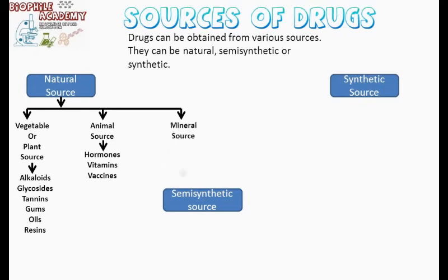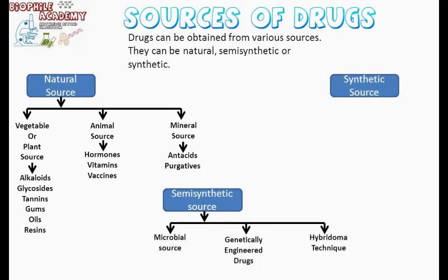Mineral sources: drugs obtained from mineral sources include antacids and purgatives. For semi-synthetic sources — microbial source: antibiotics are obtained from microbial sources, for example penicillin. Genetically engineered drugs are obtained by blending discoveries from microbiology and recombinant DNA technology, for example the hepatitis B vaccine. The hybridoma technique is concerned with the production of hybridoma cells which can secrete large amounts of desired antibodies.